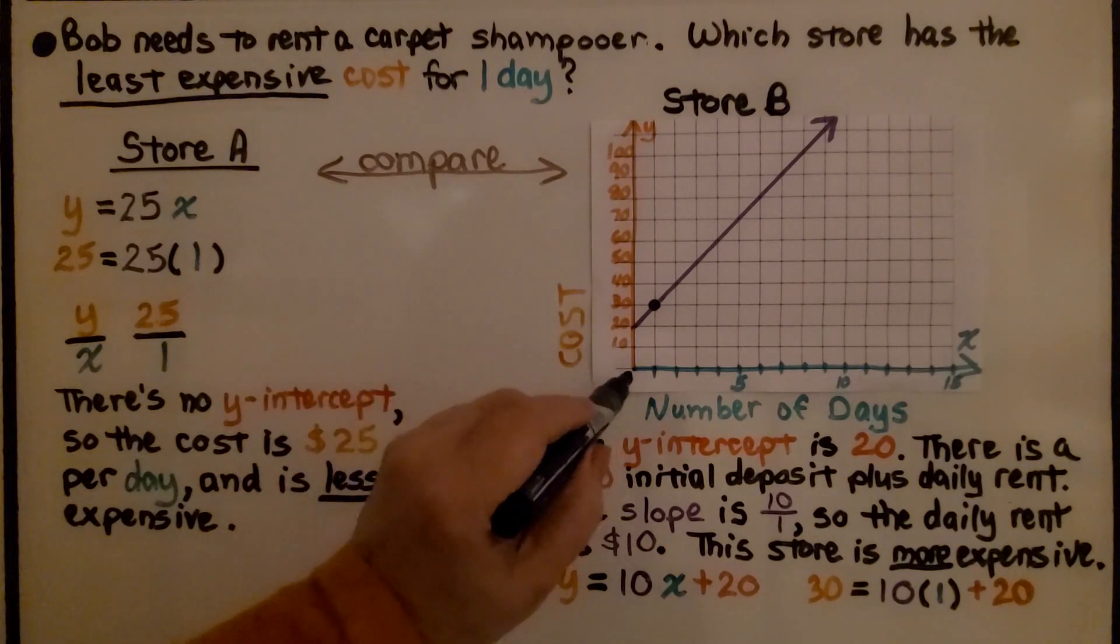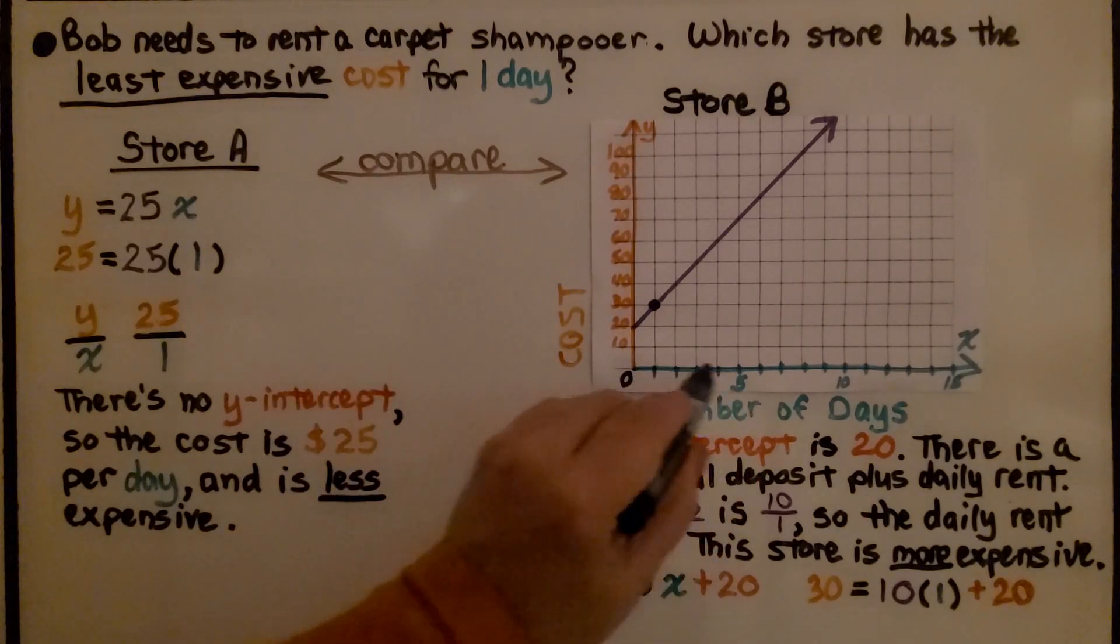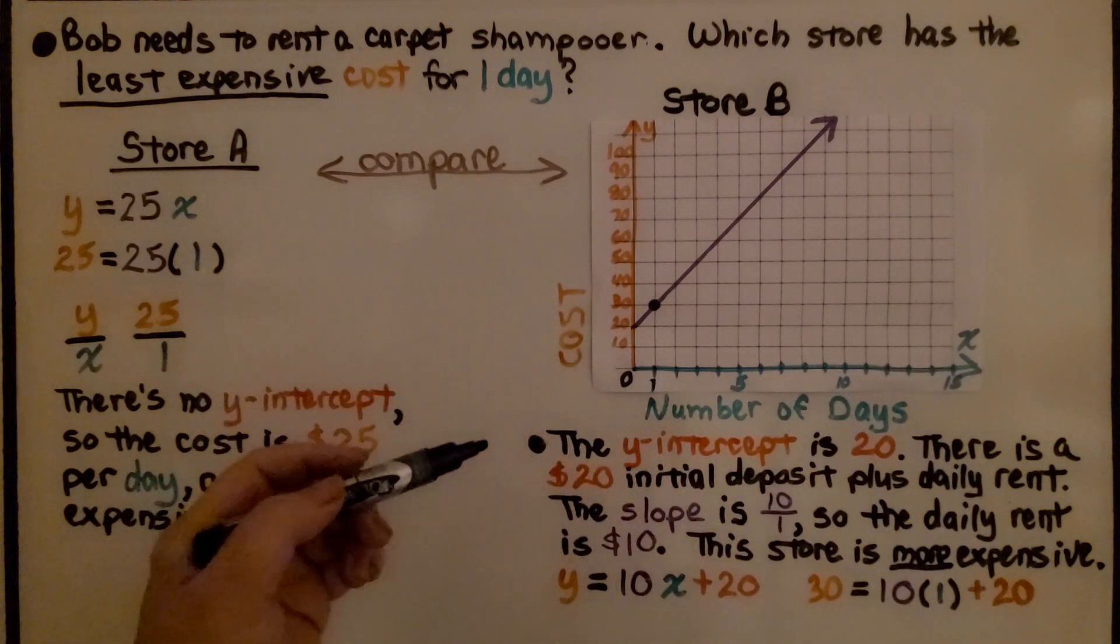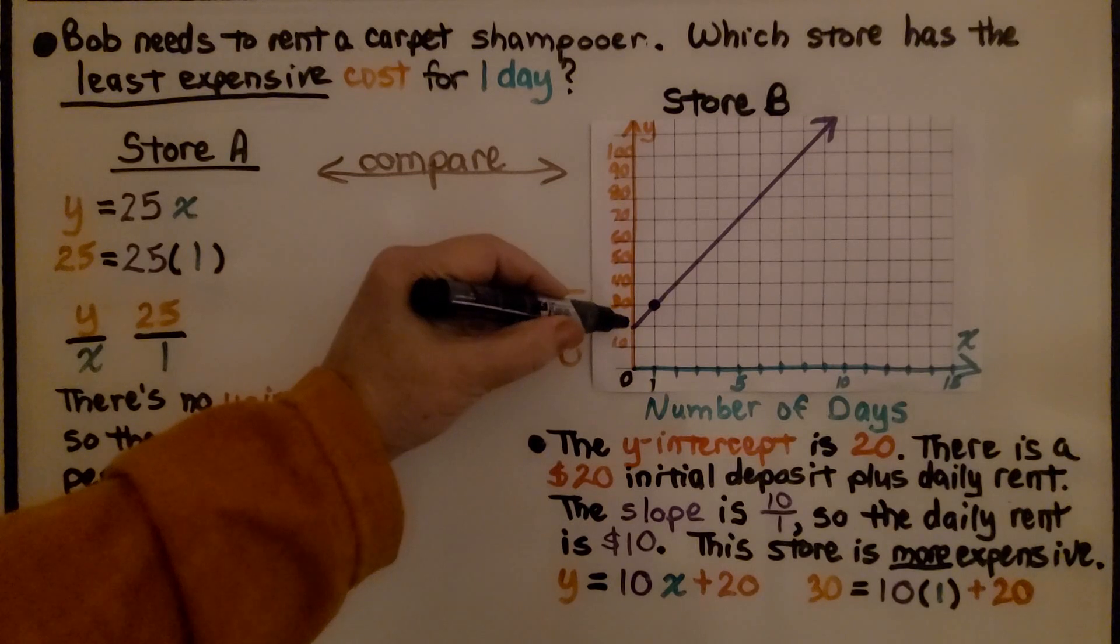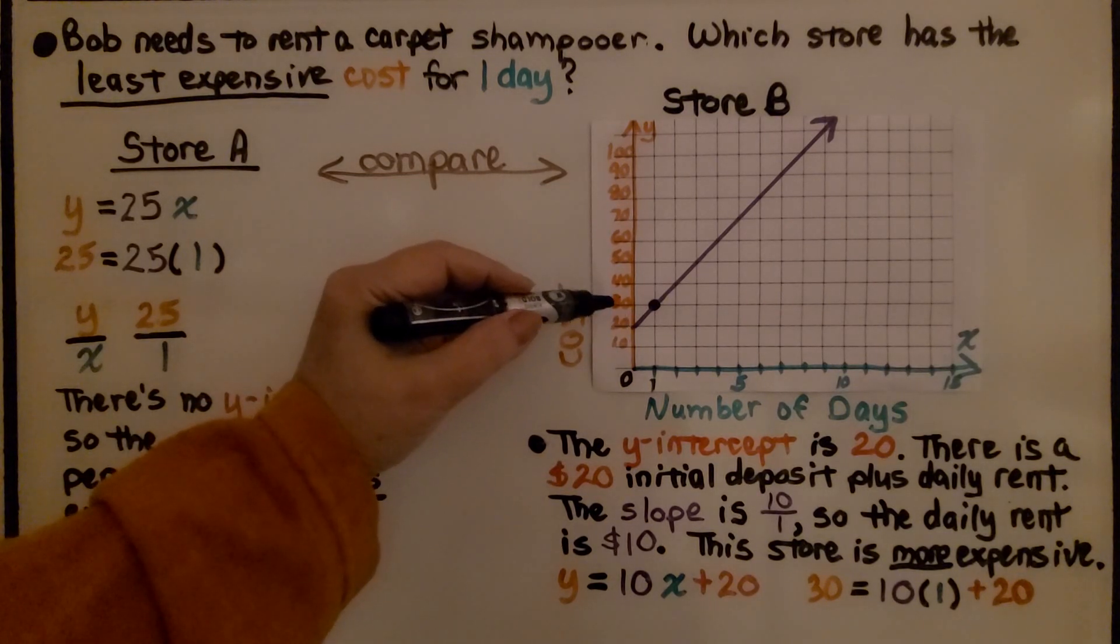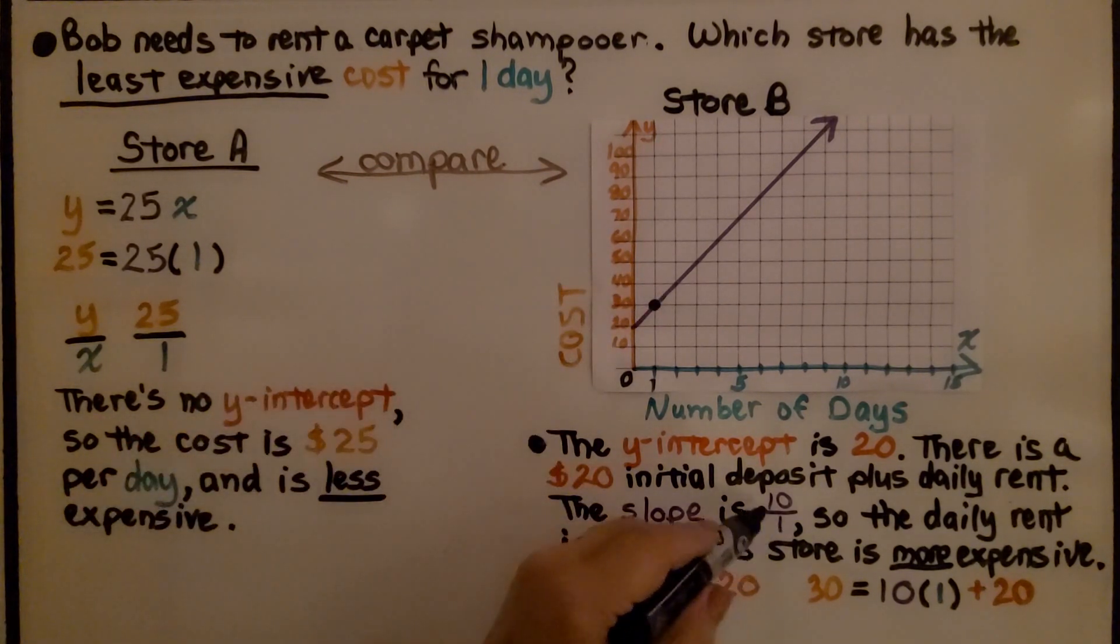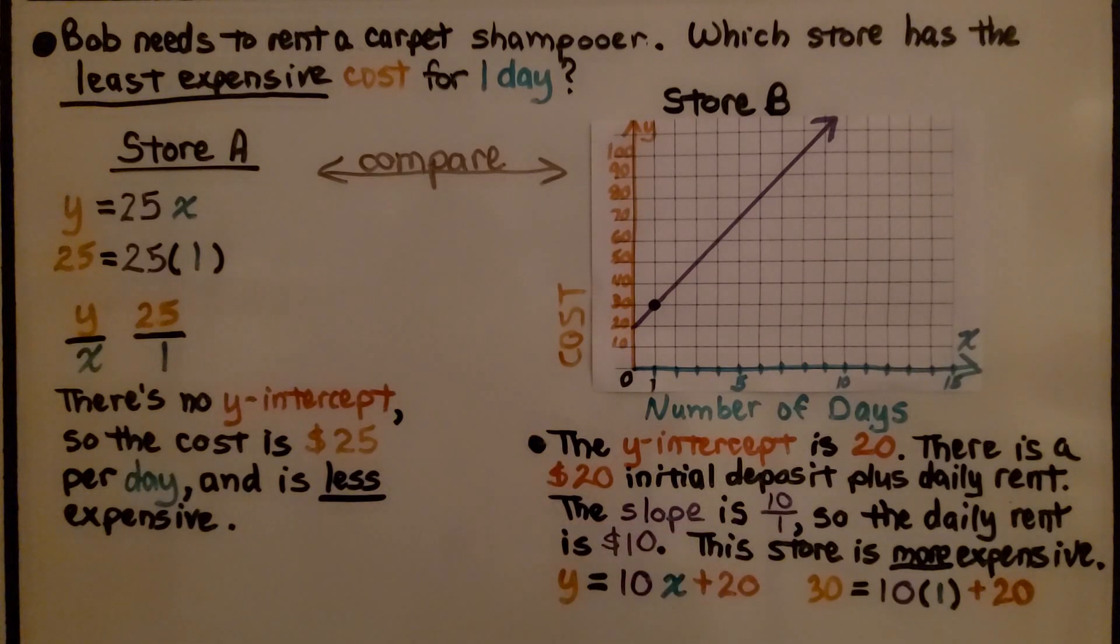If we look here, we can see our scale is counting by 5s. So this is 1 right here, and the y-intercept is 20. There is a $20 initial deposit plus daily rent. The slope is 10 over 1, so it's 10, so the daily rent is $10. This store is more expensive as an equation.